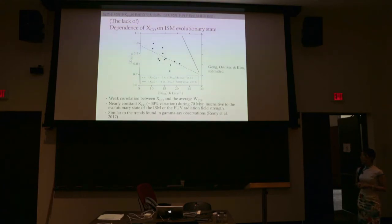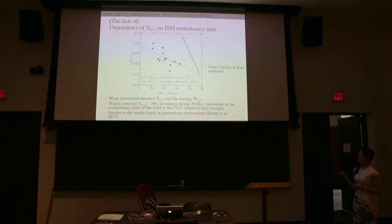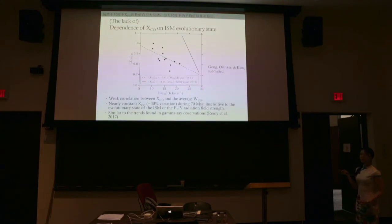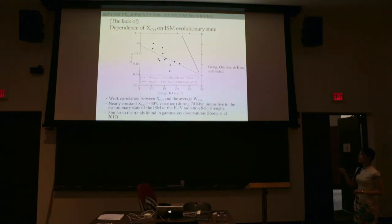Looking at XCO variation across different ISM evolutionary states in different simulation snapshots, we actually found a lack of strong variation in XCO. The average XCO varies only by about 30% while CO emission varies by a factor of a few. There is only a very weak relation. We also found a lack of correlation with other quantities like average extinction or FUV radiation field strength. This is similar to the trend found in recent Fermi gamma-ray observations, which have a steeper slope but a similar overall trend.